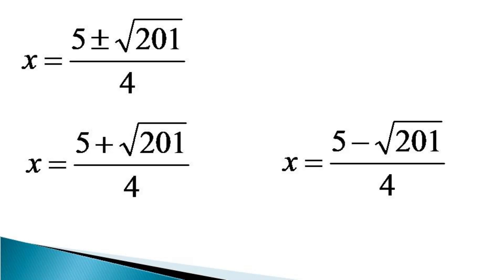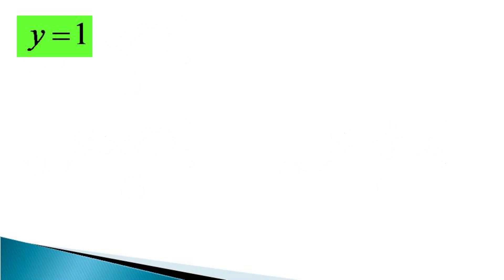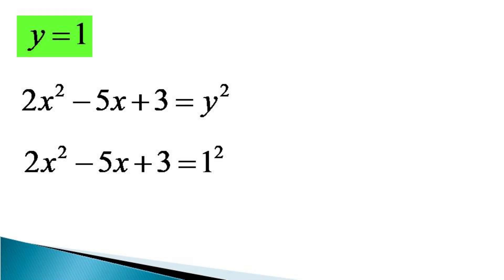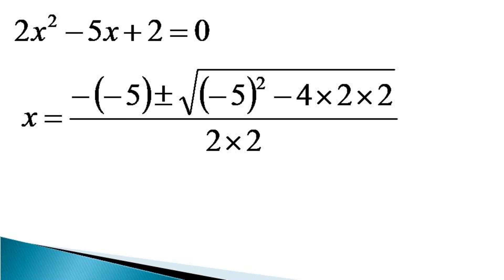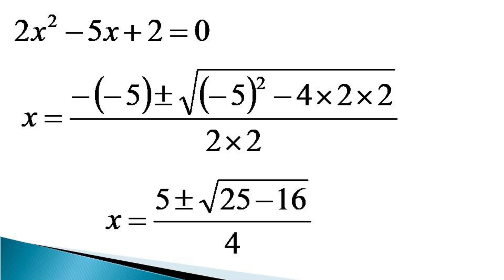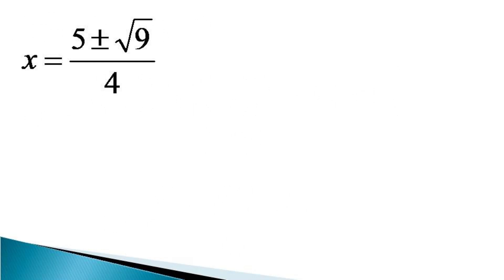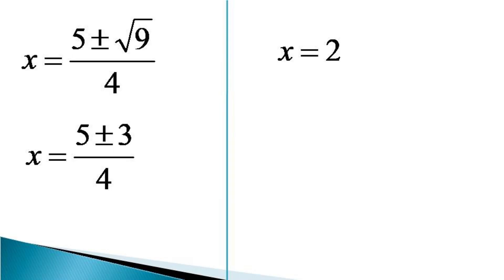Now considering y equals 1 and back-substituting into 2x² minus 5x plus 3 equals y², we get 2x² minus 5x plus 3 equals 1, or 2x² minus 5x plus 2 equals 0. Using the quadratic formula: x equals (5 plus minus under root (25 minus 16)) divided by 4, which simplifies to x equals (5 plus minus root 9) divided by 4. This gives two further values: x equals 2 and x equals one half.